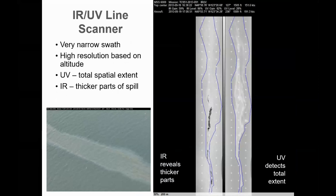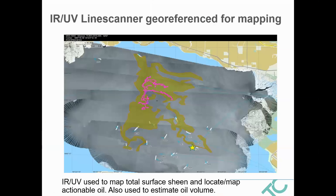The next piece of equipment is the IRUV line scanner. It's used to identify the thicker parts of the oil, as well as to document the entire spatial extent of it — as shown in this large spill, where the orange polygon represents the total spill size and the pink represents the actionable oil.